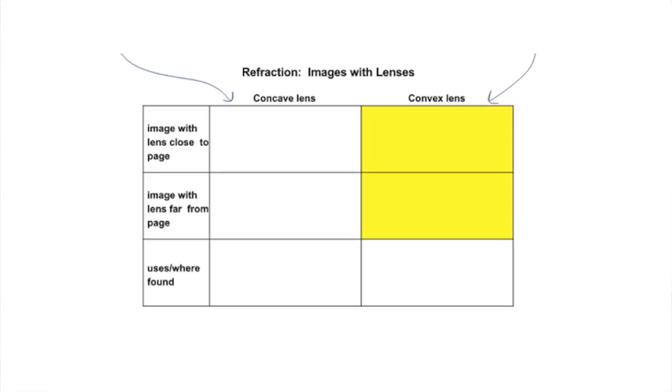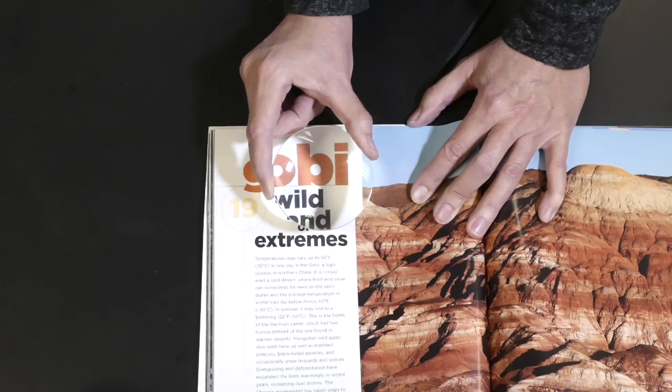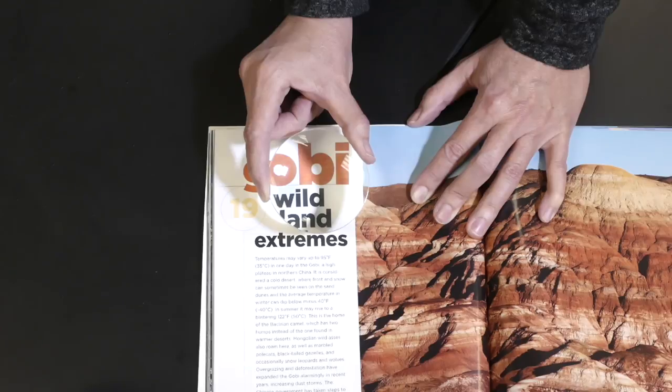Fill in this column as I show you the images through a convex lens. This is the convex lens starting at near.